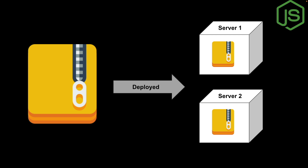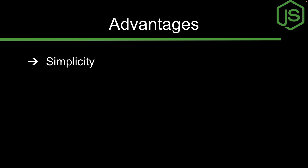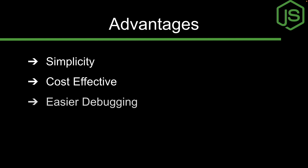Monolithic architecture has some advantages. First is simplicity — monolithic applications are simple to develop, test, and deploy as a single unit, making them easy to manage and maintain. Second is cost-effectiveness — since they're built as a single unit, there's less need for complicated architecture, making it easier and cheaper to deploy and maintain. Third is easier debugging — since all components are in one place, it's easier to track down bugs.